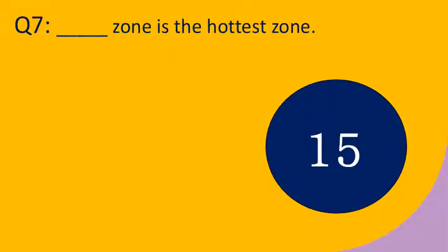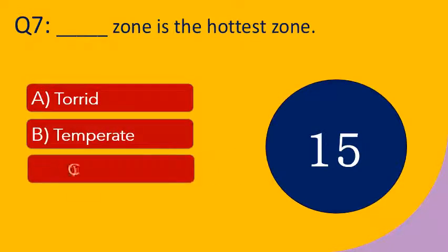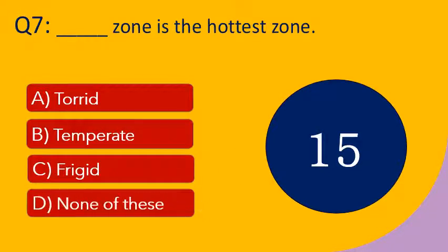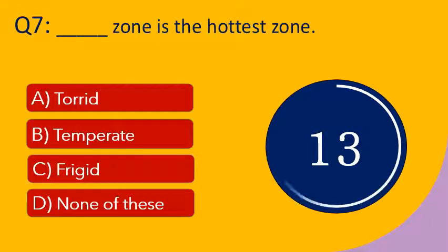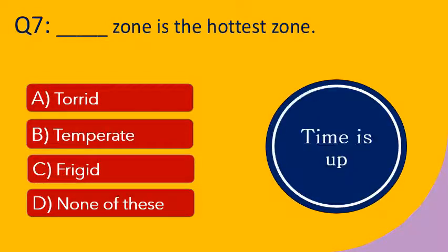Question number 7: Dash zone is the hottest zone. Options are A. Torrid, B. Temperate, C. Frigid, and D. None of these. Your time starts now. Your time is up. The right answer is torrid. Torrid zone is the hottest zone.